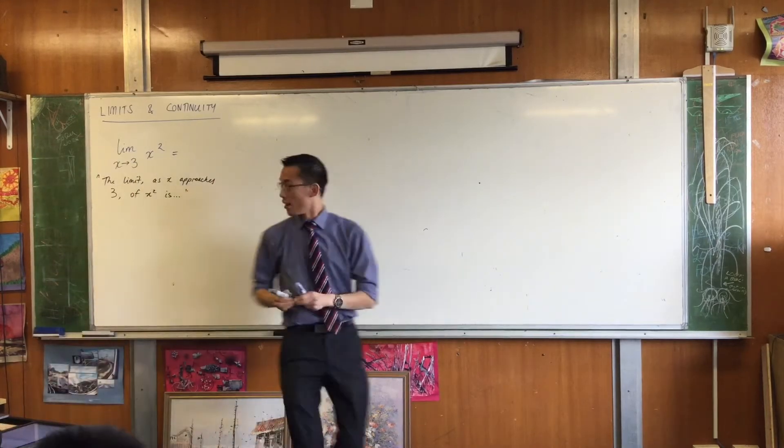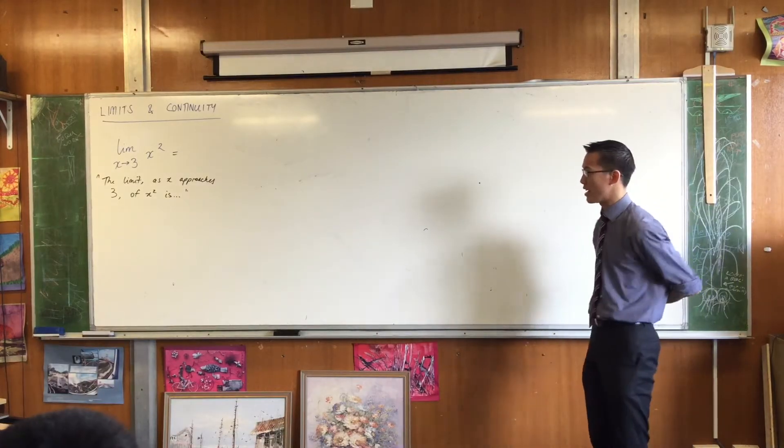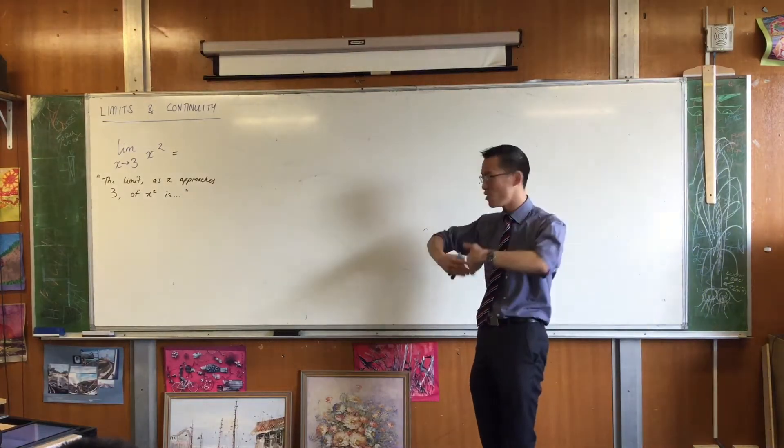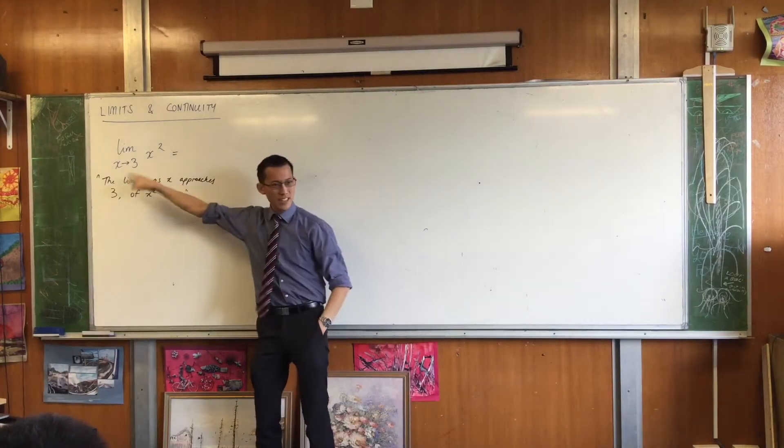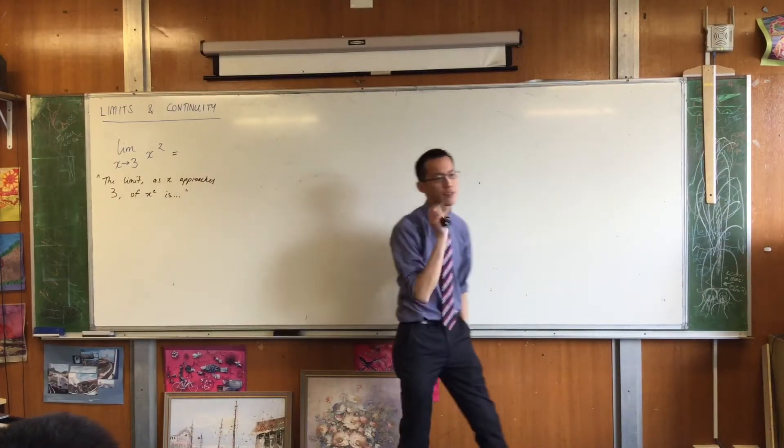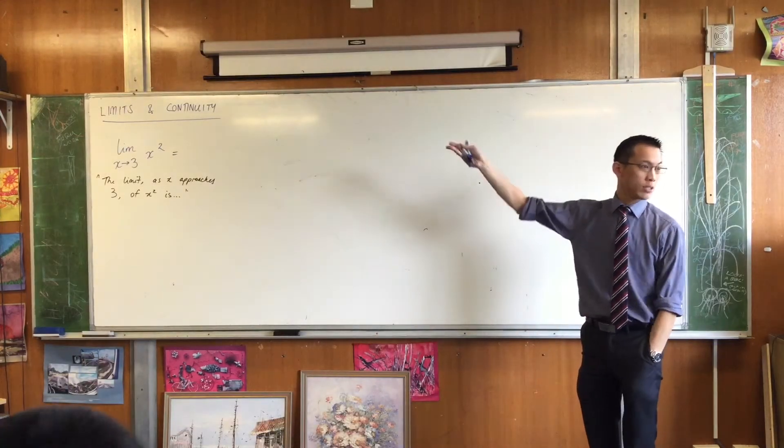So lim stands for limit, x with an arrow towards three says I'm approaching, I'm putting in x values that get closer and closer and closer to three, and what I'm putting them into is this particular function up here. You can have any function you like, I'm just using this as a nice simple example because we can actually work this out.